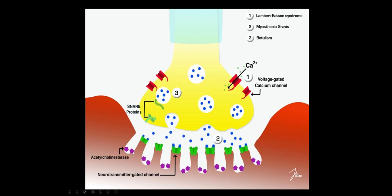Acetylcholine is unique compared to other neurotransmitters. Most neurotransmitters — whether dopamine, GABA, or others — are inactivated mainly by reuptake, where the presynaptic terminal acts like a sponge. But for acetylcholine, it's mainly inactivated by the enzyme acetylcholinesterase. That's why medications that act against acetylcholinesterase have a very profound effect on acetylcholine.